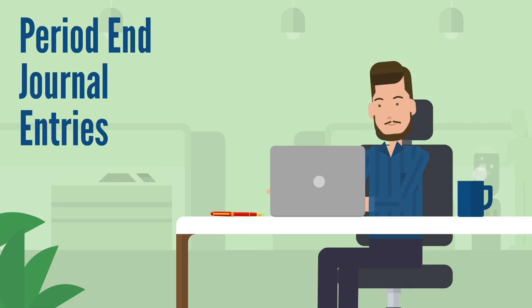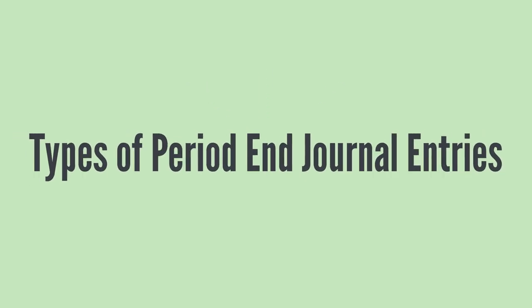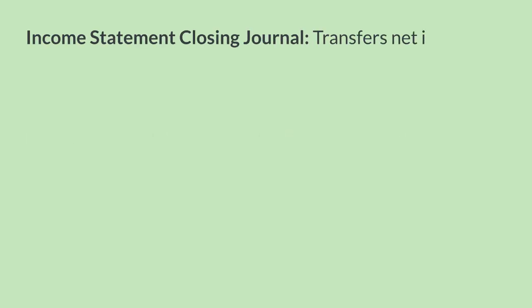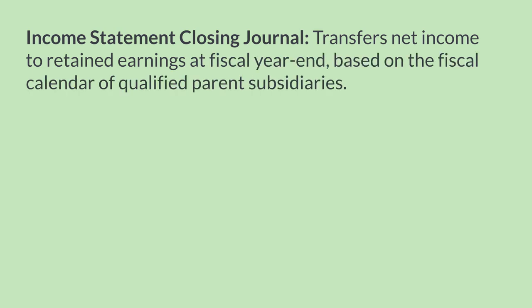Let's take a quick overview of period end journal entries in NetSuite. There are three main types of period end journals, and all of these would only apply for subsidiaries that have enabled this feature. First, there's the income statement closing journal — this journal entry will move your net income into retained earnings at the end of the fiscal year.